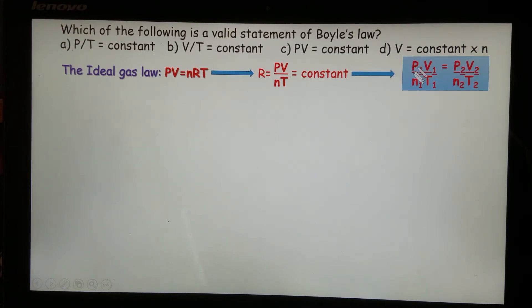In other words, the ratio before the change, we say P1V1 over n1T1, should equal P2V2 over n2T2 after the change. Before the change, after the change, should have the same constant.